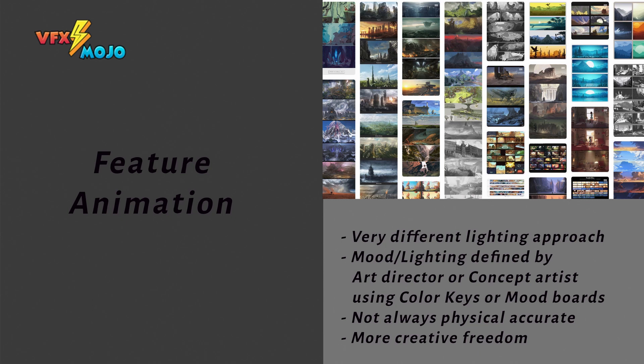Feature animation has generally a very different approach in lighting. The mood and lighting is usually defined by an art director or concept artist, and this happens for the entire movie. Color keys and mood boards will give a guide to the lighting team to light their shots. Reality often gets bent to achieve the lighting necessary, and there are also fewer rules in terms of following physical, plausible lighting — but usually lighting still has to be believable for the viewer. In feature animation, there is also often a difference between shot TDs and lighters. Lighters concentrate on the creative aspects and actual lighting work, whereas the shot TDs take care of the shot assembly, debugging and optimizations.